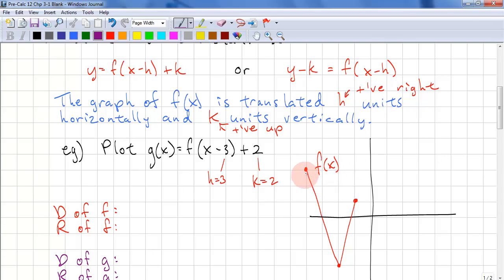We simply shift right 3 and up 2. Right 3 and up 2. Right 3 and up 2. And since these are lines, we can just connect the dots. And this is g of x.